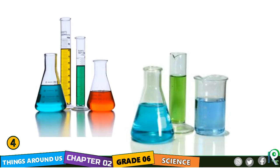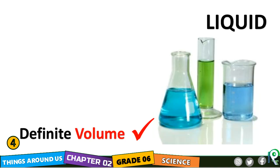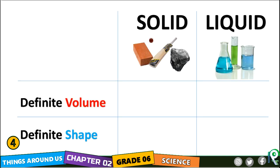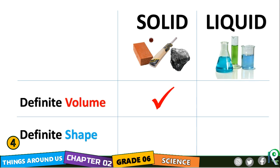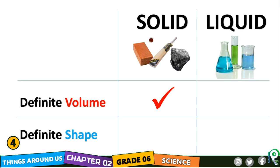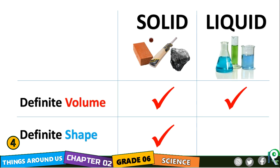In this activity, though you put the same volume of water into the containers, water takes the shape of the container. Hence, a liquid has a definite volume but it has no definite shape. So: solid has definite volume and definite shape, but liquid has definite volume and no definite shape.